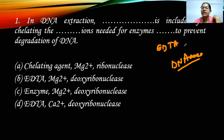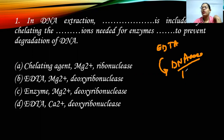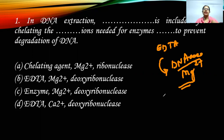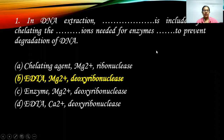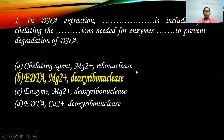If we use EDTA, it is going to prevent the activity of DNases and stop degradation of DNA. We also know that Mg2+ is the cofactor for DNases. So the answer is EDTA, Mg2+, and deoxyribonucleases — that is the second option.